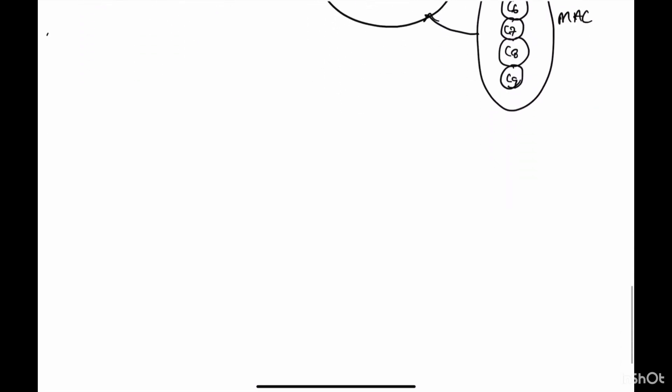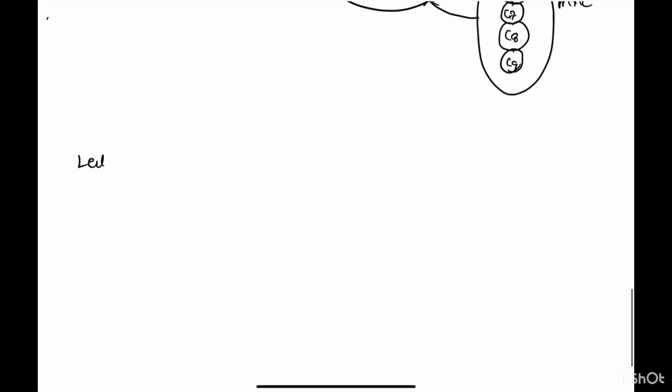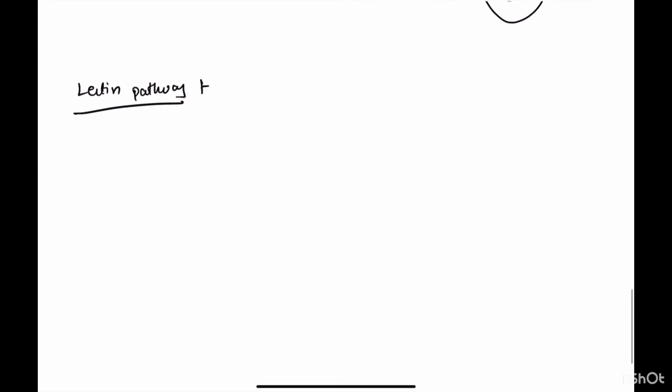The lectin-mediated complement pathway is similar to the classic complement pathway except it does not require IgG or IgM for activation. It starts when microbial surface lectins or other sugars are present and complement components come and attach to them.